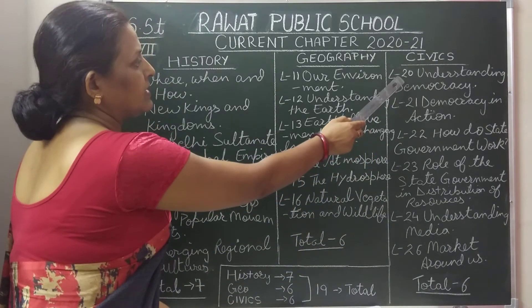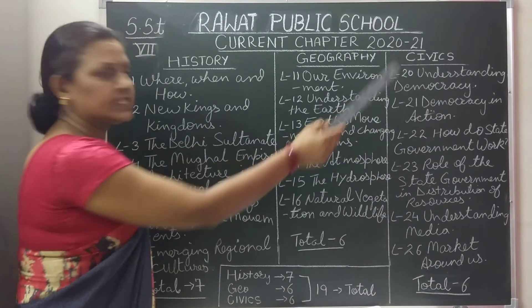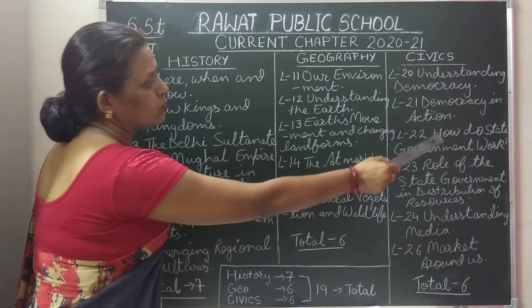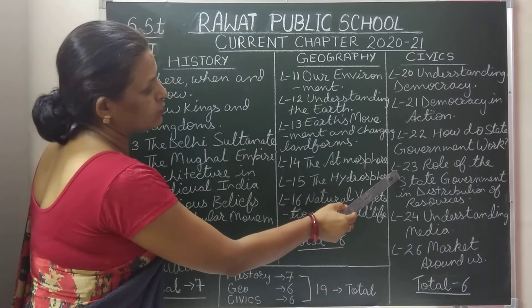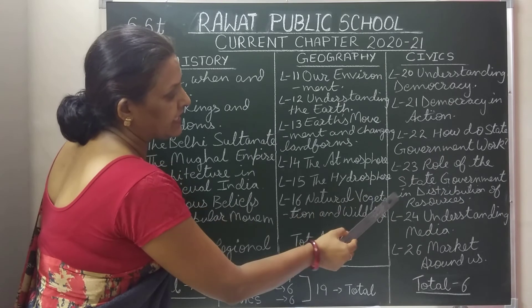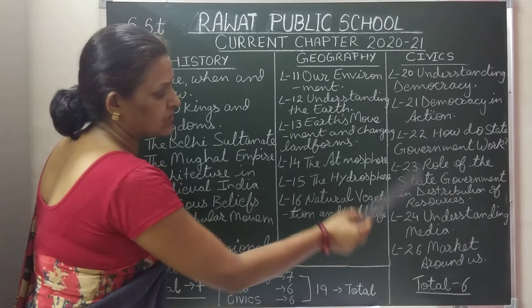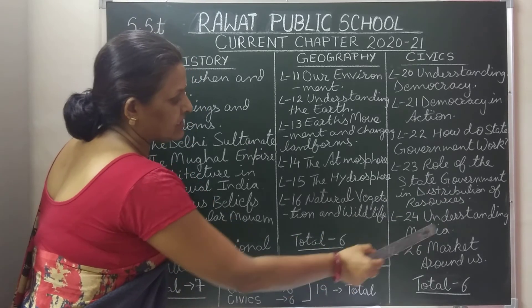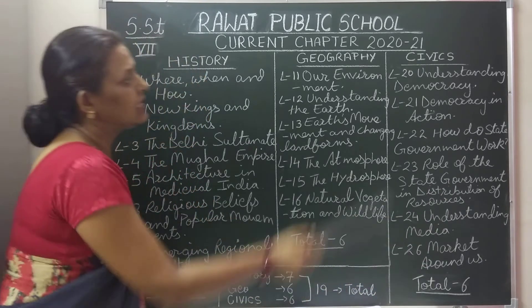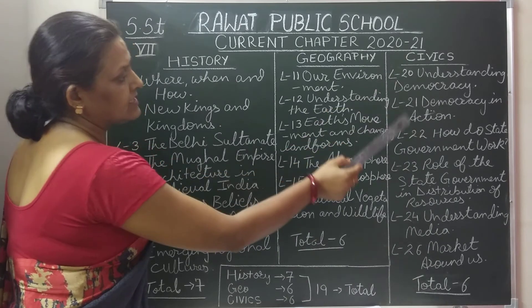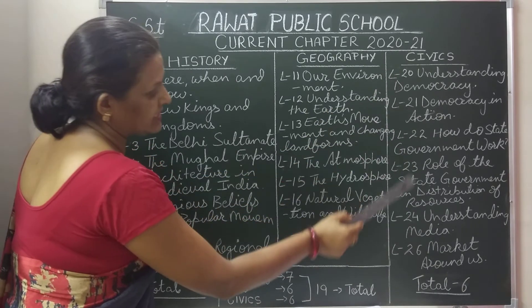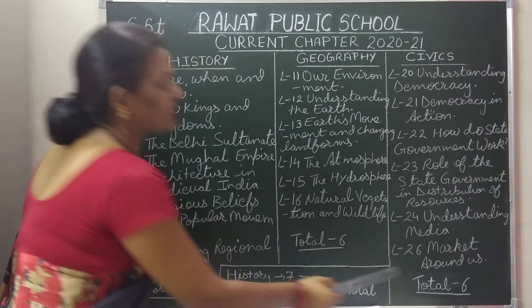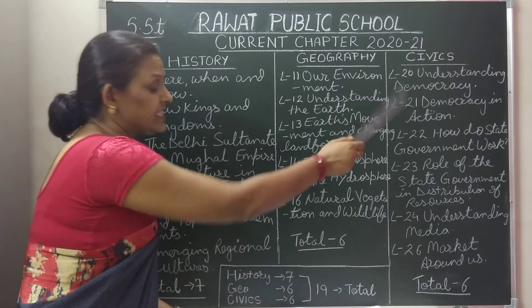Now, in civics. Lesson number 20: Understanding Democracy. Lesson number 21: Democracy in Action. Lesson number 22: How Do State Governments Work. Lesson number 24: Understanding Media. And lesson number 26: Market Around Us. Lesson numbers 20, 21, 22, 23, 24, and 26 — these are a total of 6 chapters which we are going to study this year.